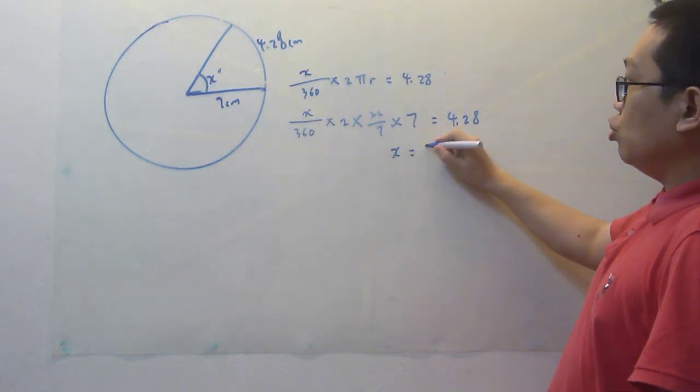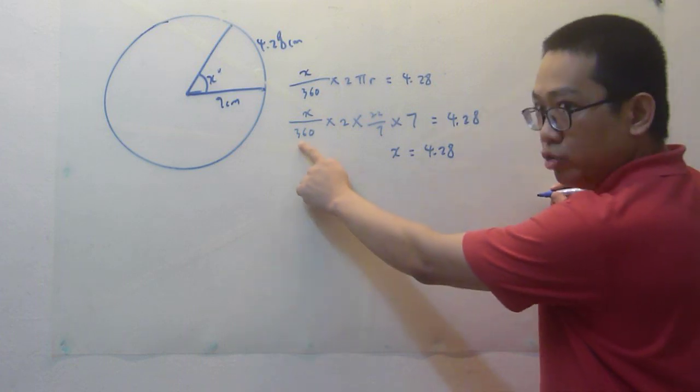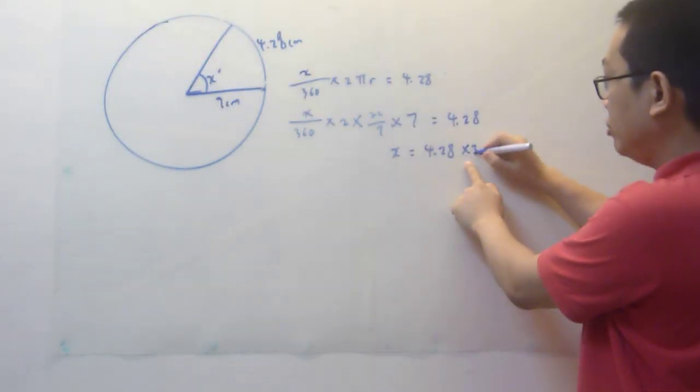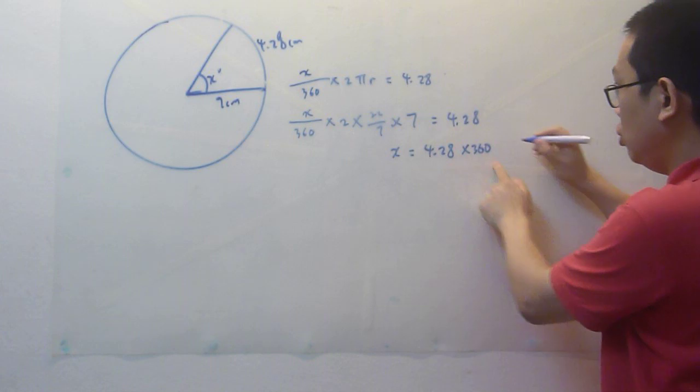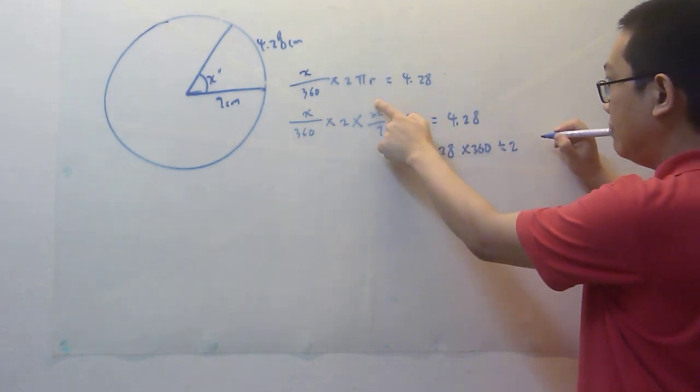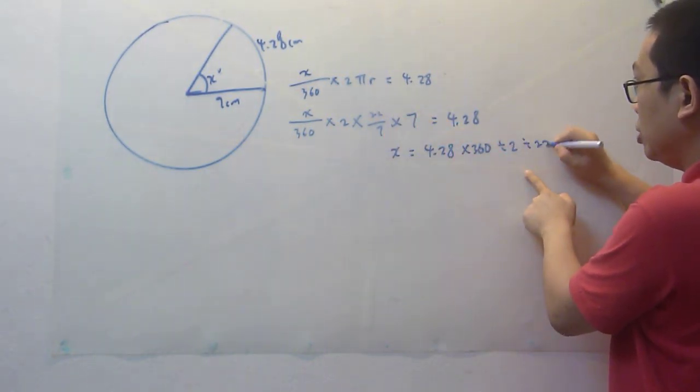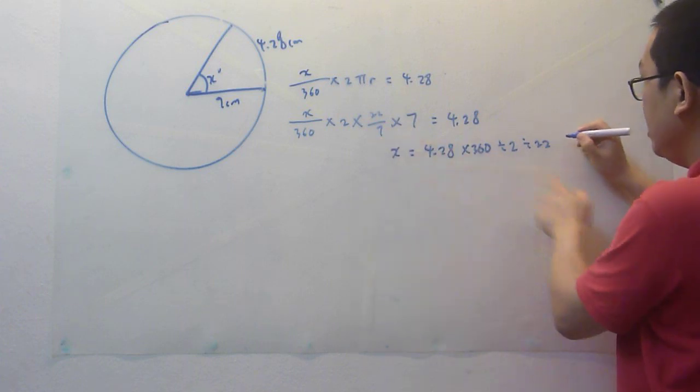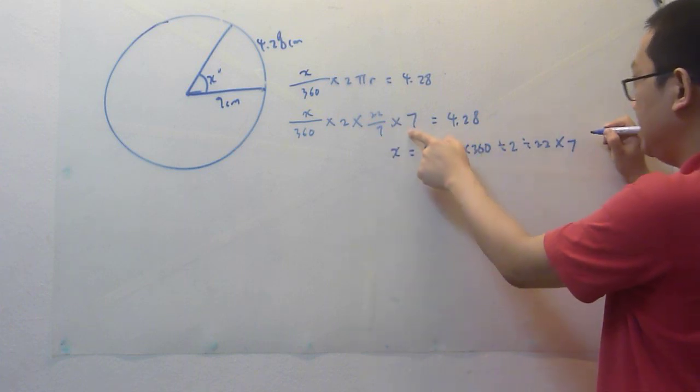So x equals 4.28. Divide 360 becomes times 360. Times 2 becomes divide 2. Times 22, divide 22. Divide 7, times 7.